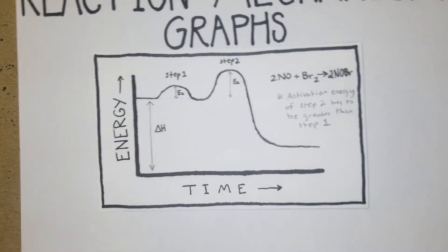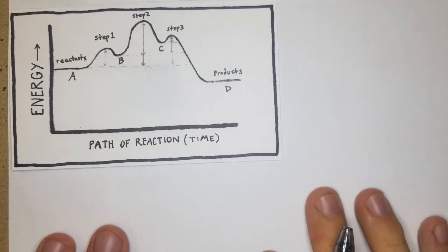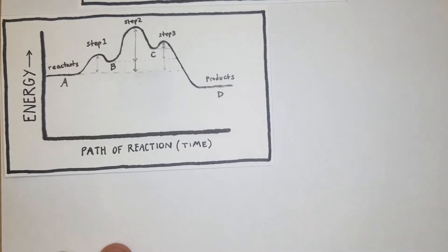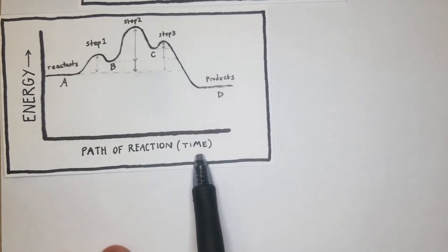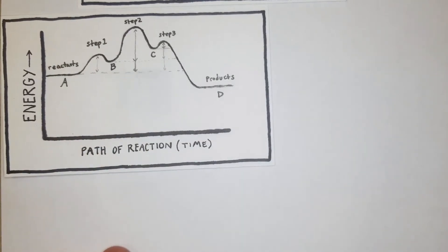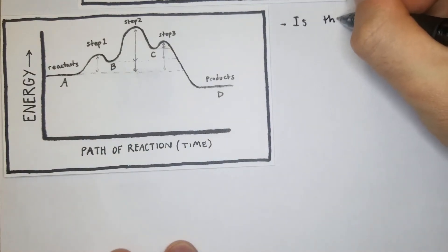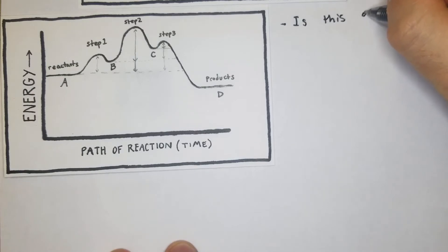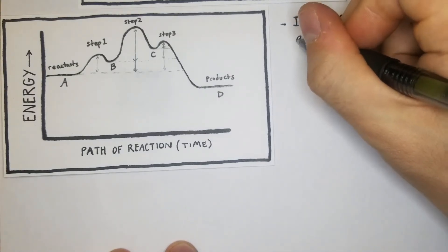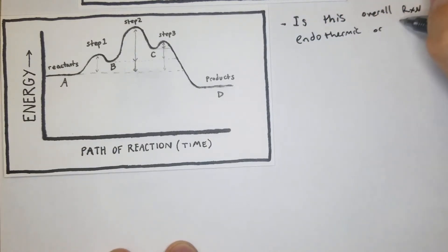Now jumping into the first problem: in this graph we have the path of the reaction on the x-axis and energy on the y-axis, with points A, B, C, and D marked. One of the standard question types is: is this overall reaction endothermic or exothermic?